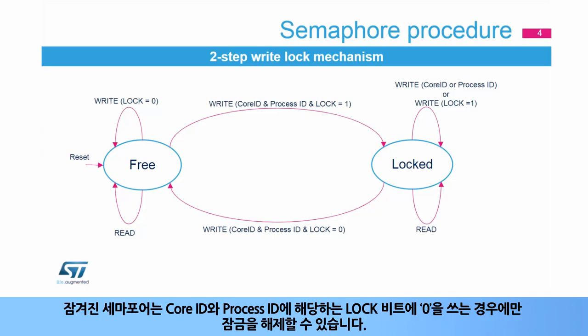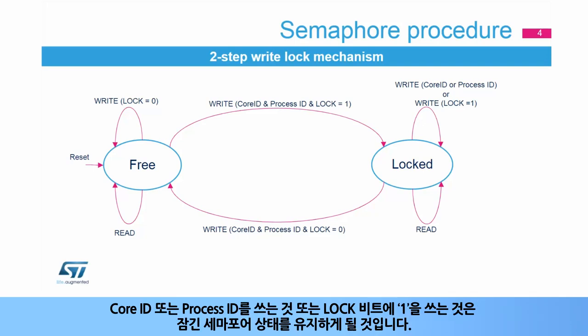A locked semaphore can only be unlocked by writing the lock bit to 0 with the corresponding core ID and process ID. Writing the wrong core ID or process ID, or writing the lock bit with 1, will keep the semaphore locked.